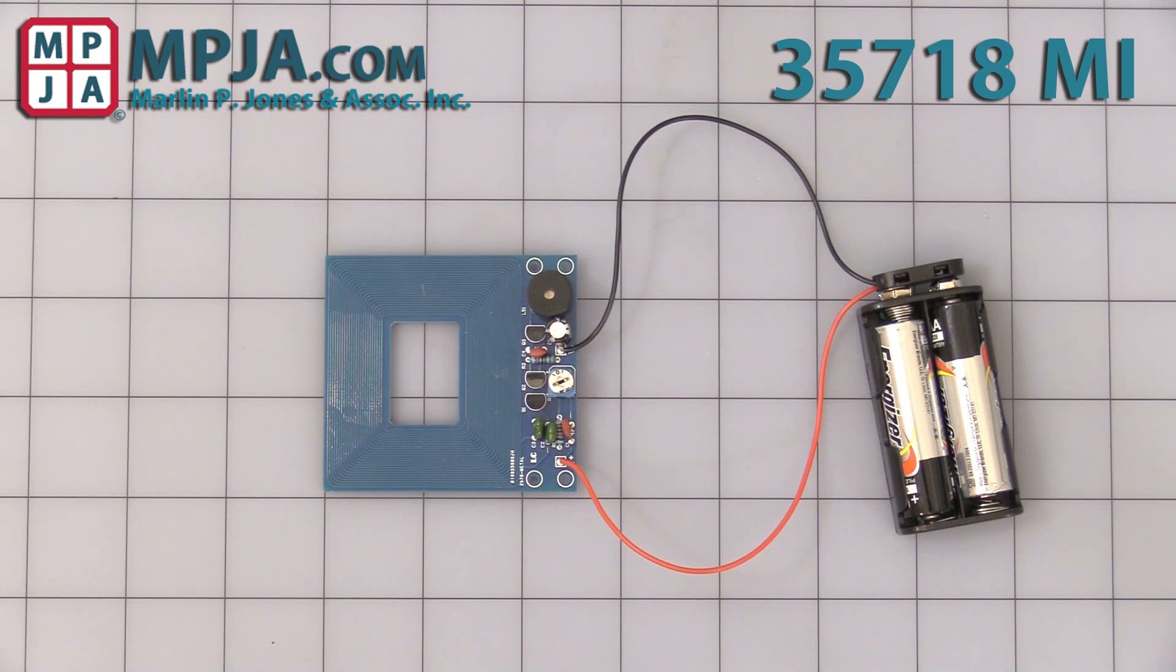Hello, today's video is on our stock number 35718MI, a very simple basic coil metal detector.